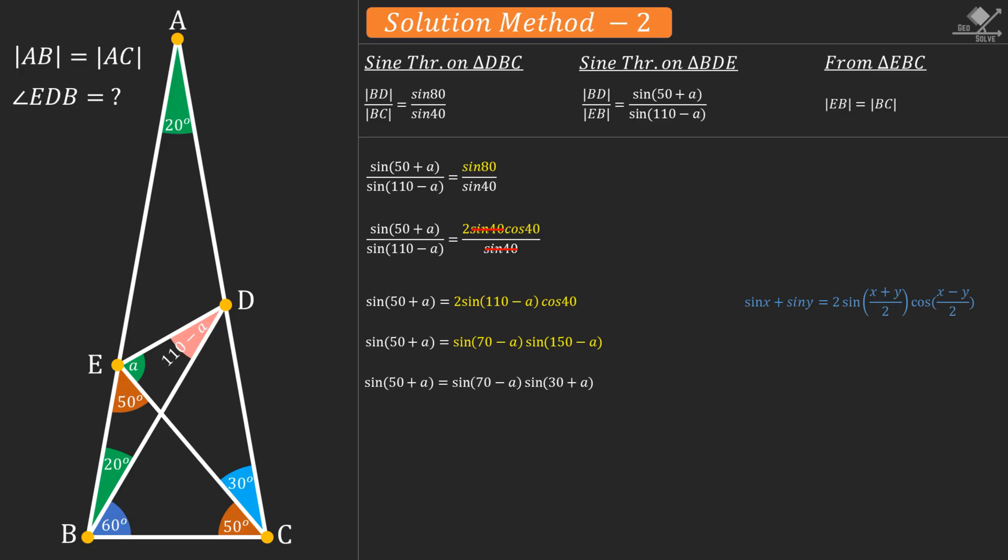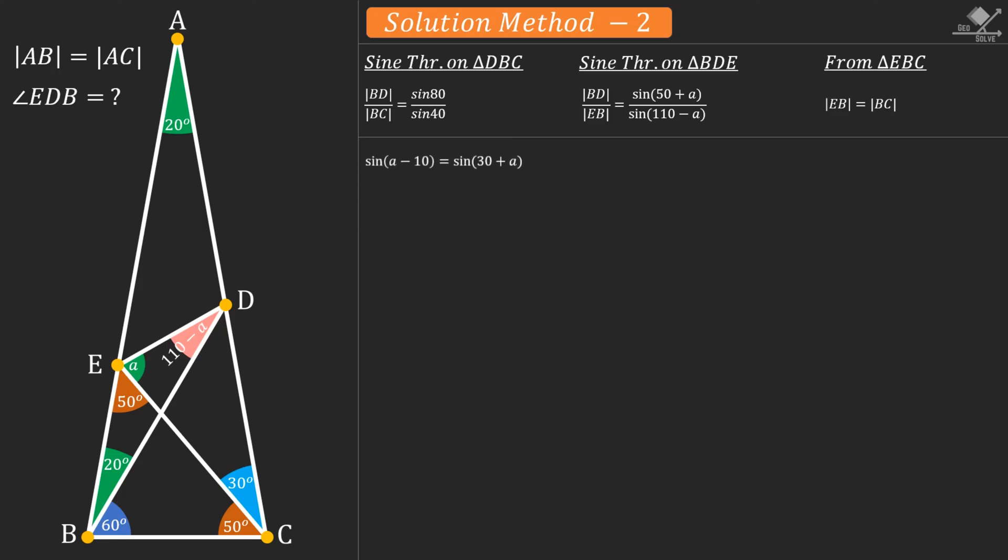And move sine 70 minus A term to the other side of the equation also using this property. Using the same trigonometric identity, the left side can be rewritten as follows. From here, cosine 60 and 2 will cancel out. Now we have this final equation to solve.